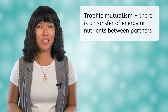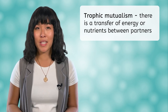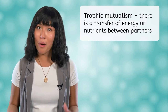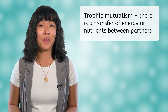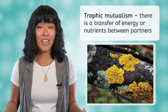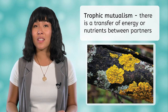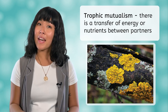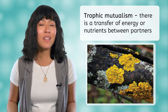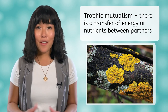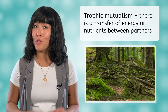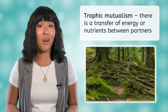Trophic mutualism, also called resource-to-resource mutualism, is when there is a transfer of energy or nutrients between the partners. A common example is when a fungi and a photosynthetic plant work together — the fungi provides nutrients to the plant through its roots and the plant provides the fungi with much needed carbon. Together, the fungi and plant involved in this mutualistic relationship are called lichen.